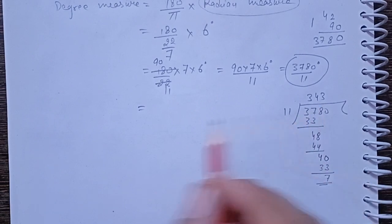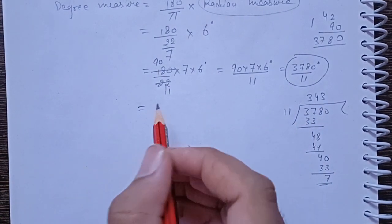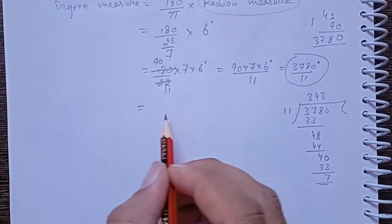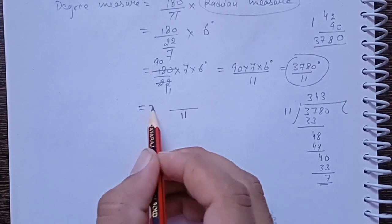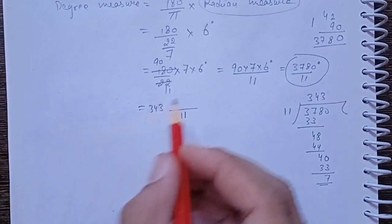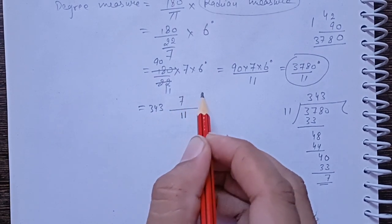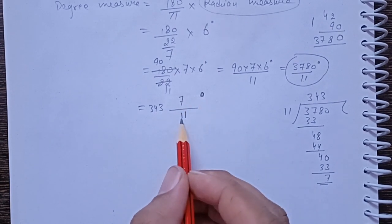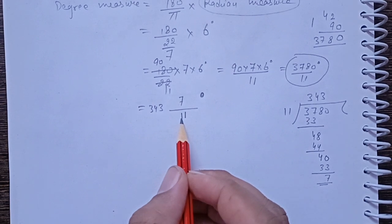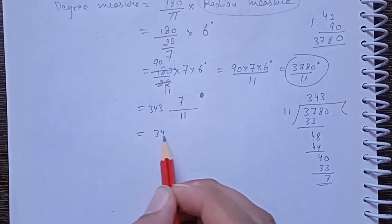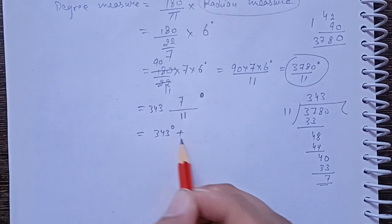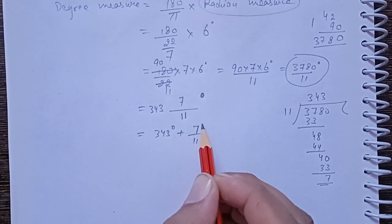The remainder from division is 7, with divisor 11. Convert this value to a mixed fraction. We write the answer as 3780 divided by 11, which equals 343 and 7/11 degrees. So we can write it as 343 degrees plus 7/11 degrees.